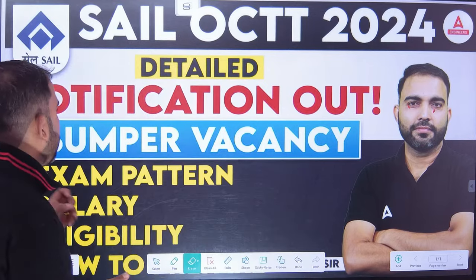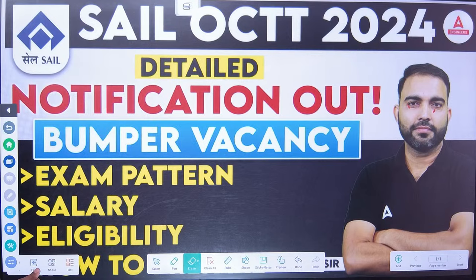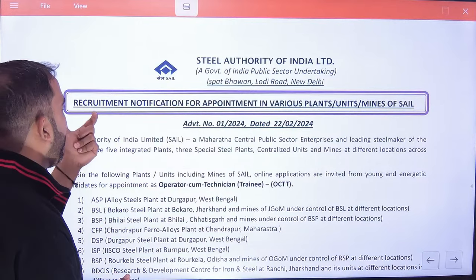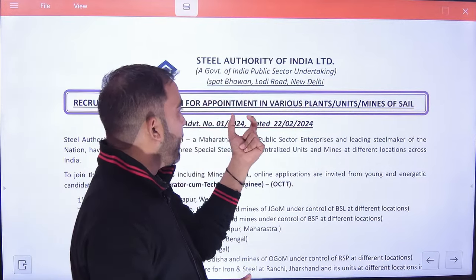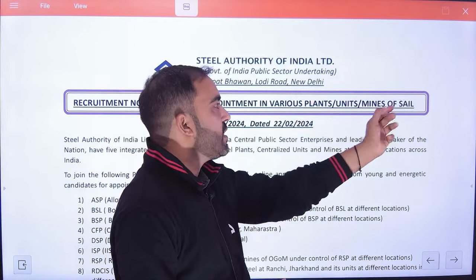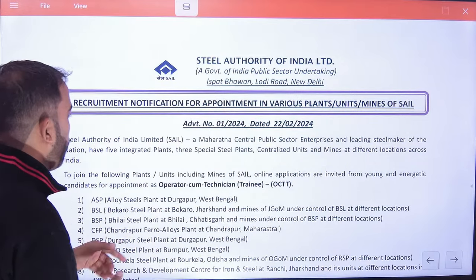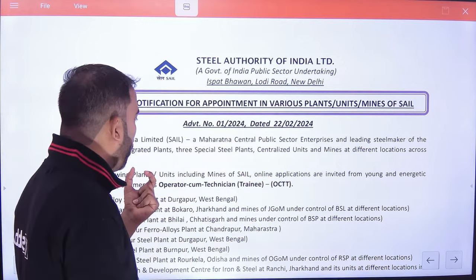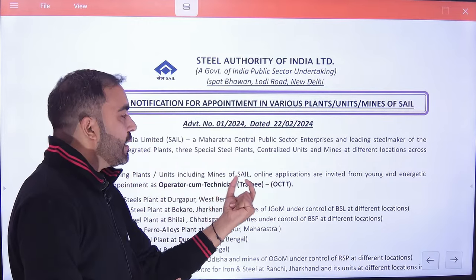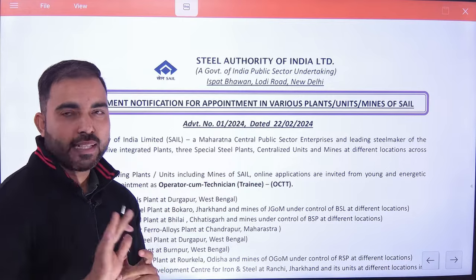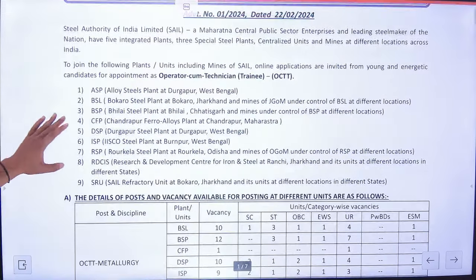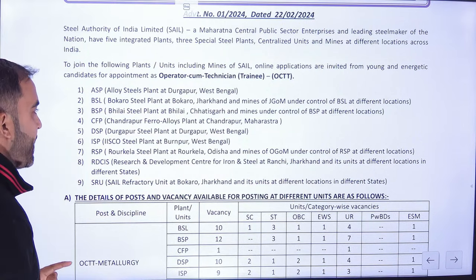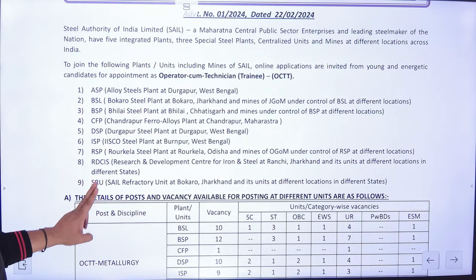देखिए, जो आपकी vacancy आई है, मैं आपको बता देता हूँ। इसमें बहुत सारी चीज़ें आप लोगों से discuss करने वाला हूँ notification से संबंधित। जैसे आप लोगों का recruitment notification for appointment at various plant units in SAIL। तो basically आप लोगों को यहाँ पे जो vacancy है वो OCTT, मतलब Operator Come Technician Trainee। यह आप लोगों की post है। इन-इन plants में Steel Authority of India को हमारी जरूरत है।